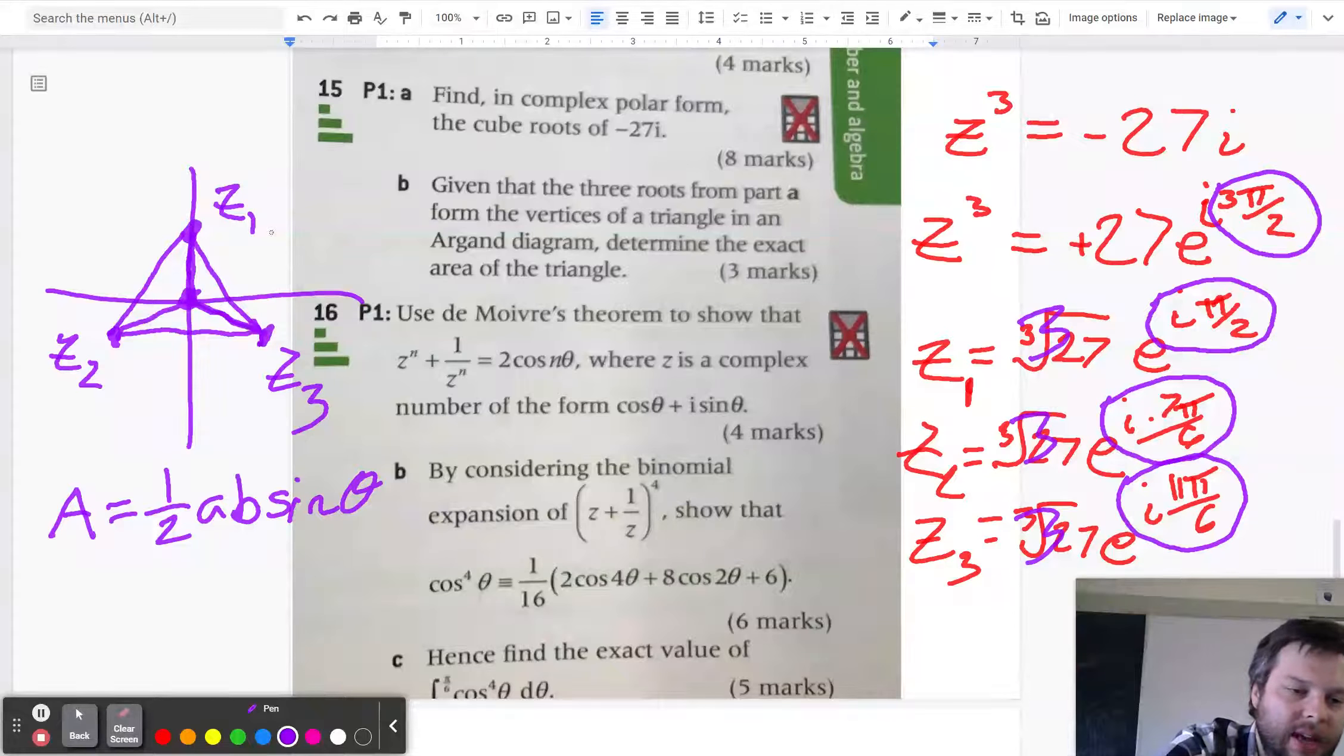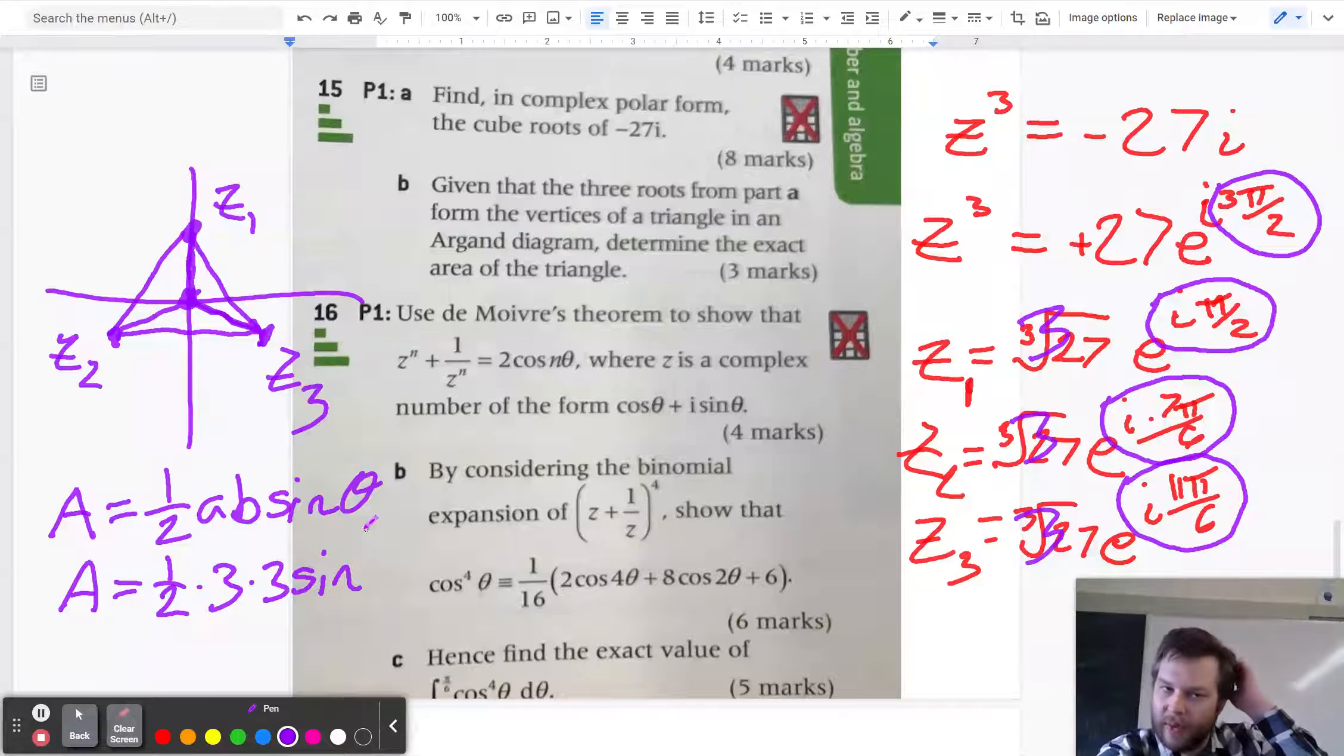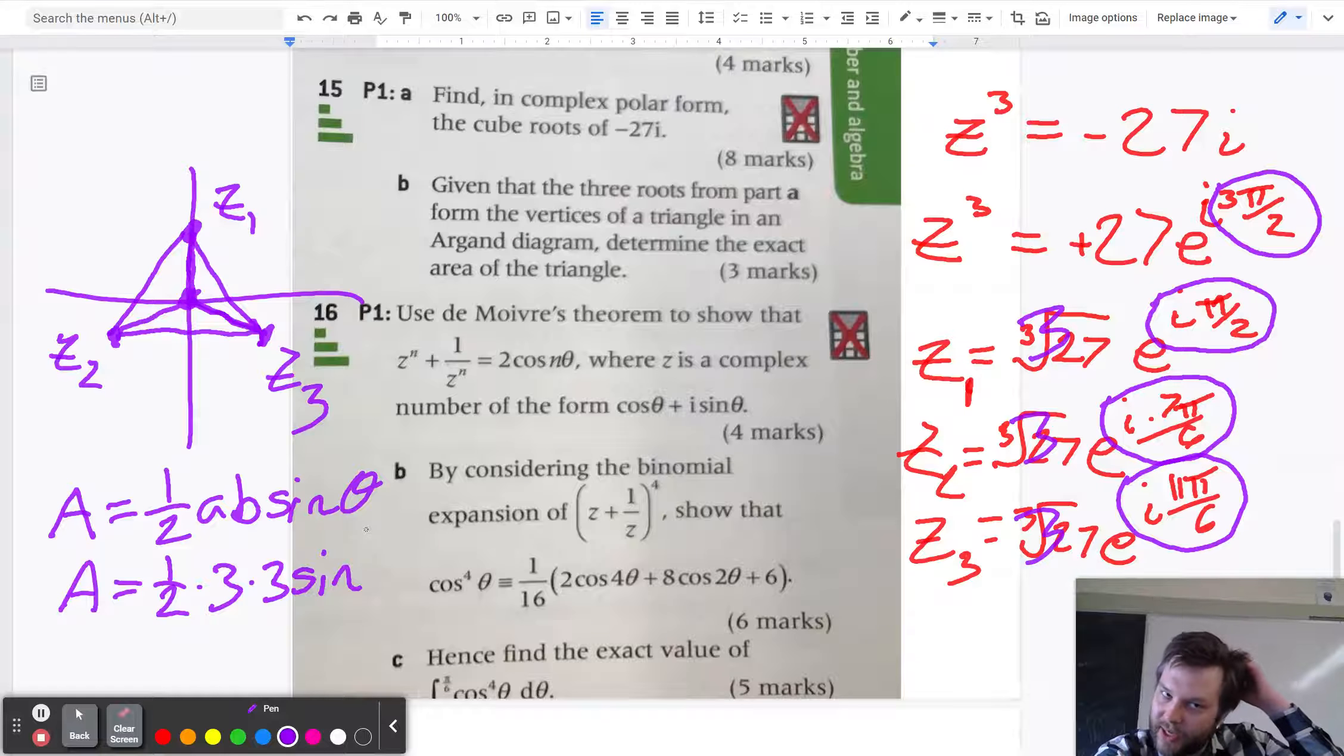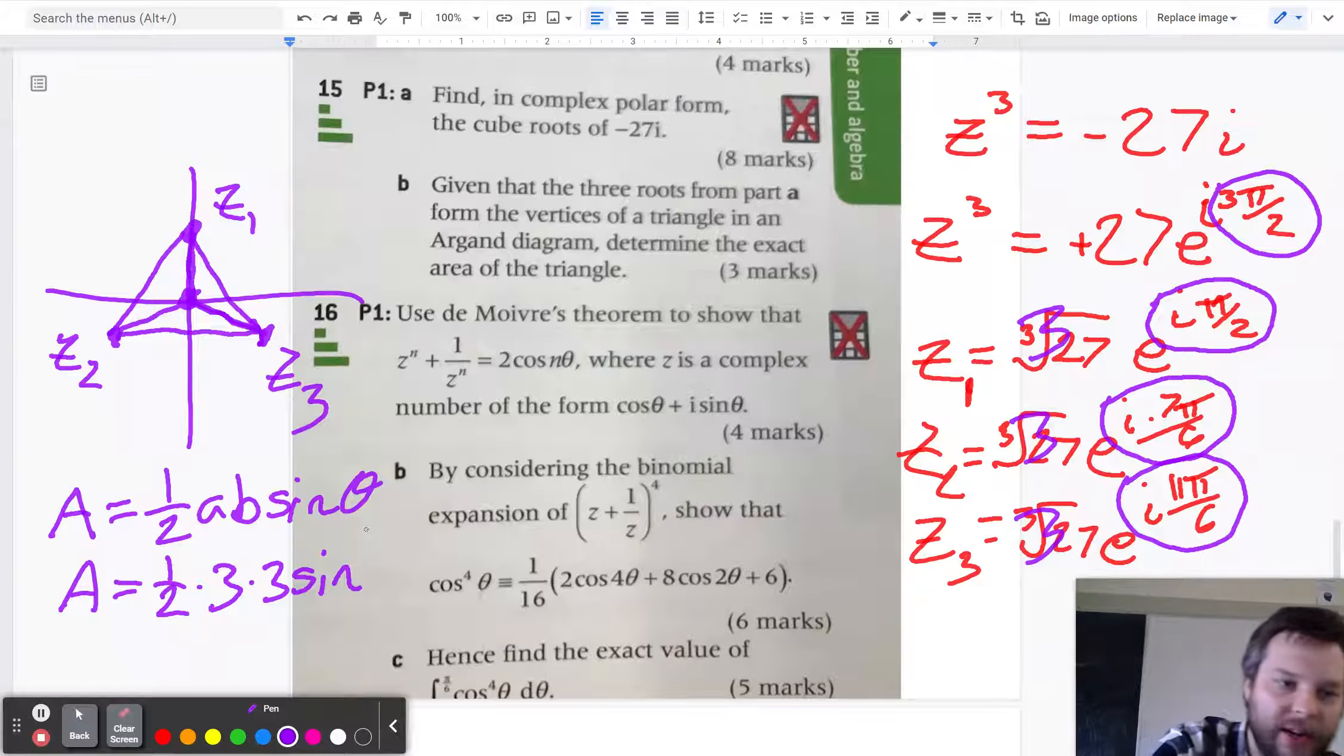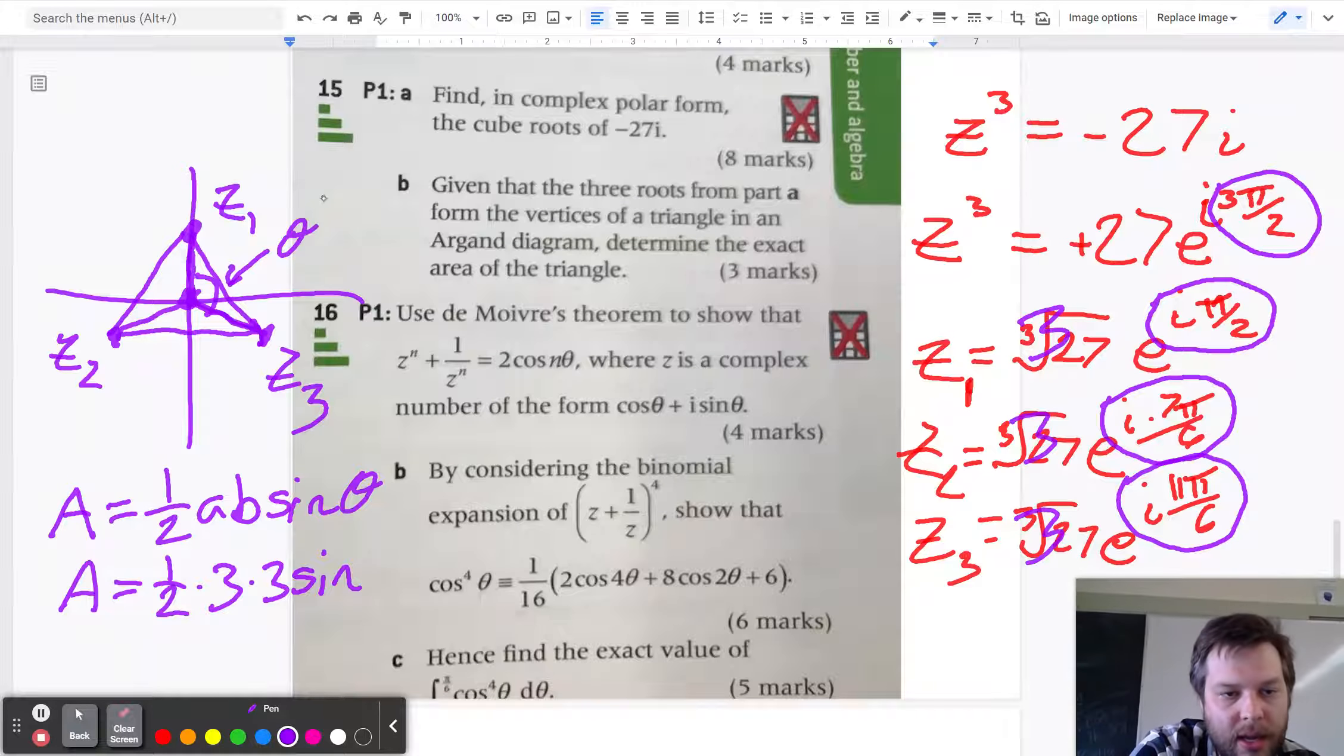And the nice thing about each of those triangles is they're isosceles with a length of 3 on either side. And so the area of each of those little triangles will be, and this is just the area of the small triangles, 1 half times the length, which is 3 times the length, which is 3 times the sine of. And then we need to think about what angle is in between there. So I'm talking about this theta, for example.